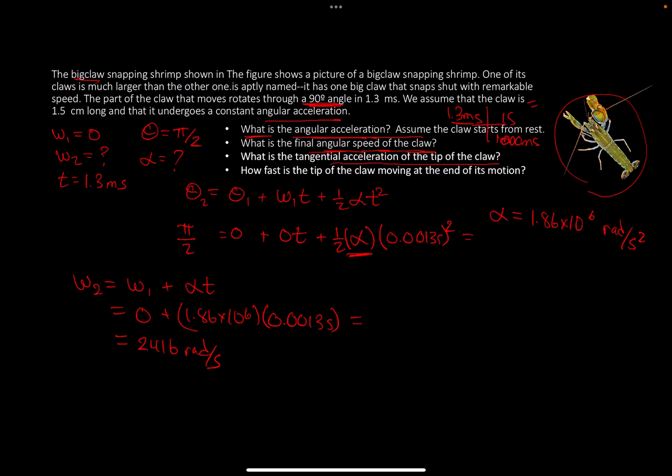What is the tangential acceleration at the tip of the claw? I'm going to take the angular acceleration, 1.86 × 10⁶ radians per second squared. There are 2π radians in one revolution, and one revolution is a circle, so it's the circumference, which is 2πr.